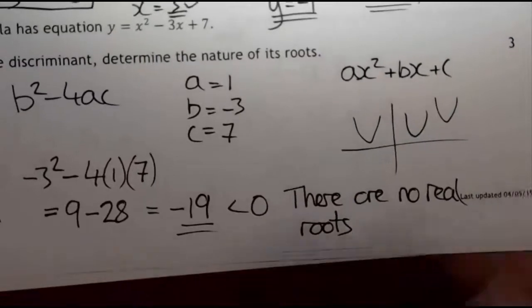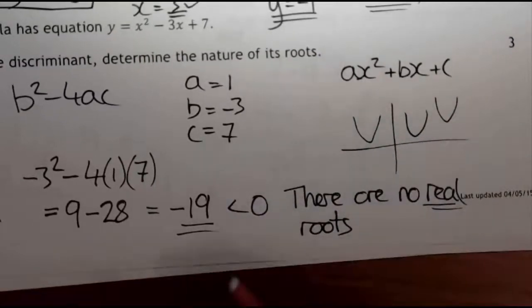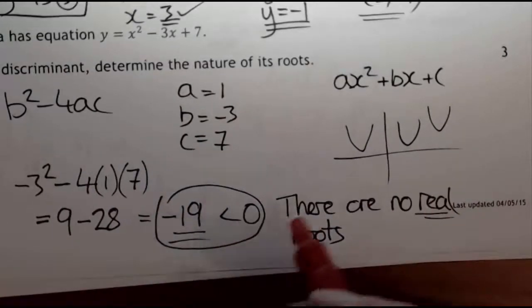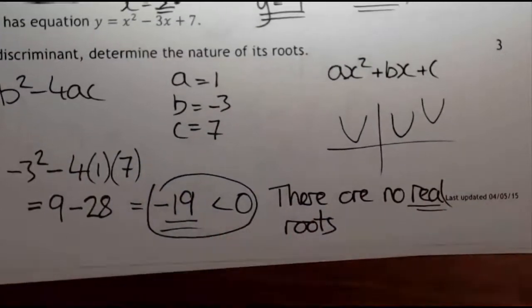So that means you've got a parabola that's not going through the x-axis. You need to remember what happens if it's equal to zero, what happens if it's greater than zero, and that's what happens if it's less than zero.